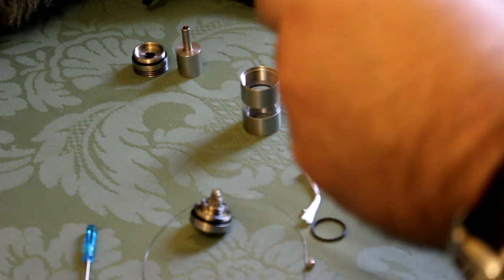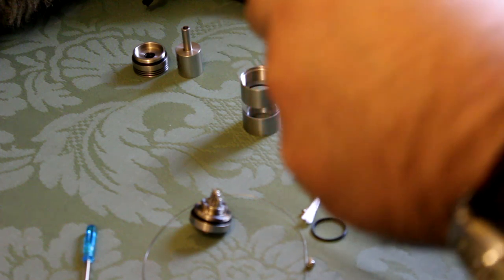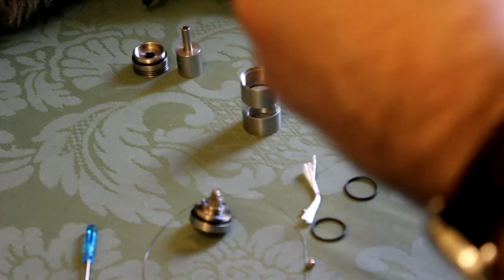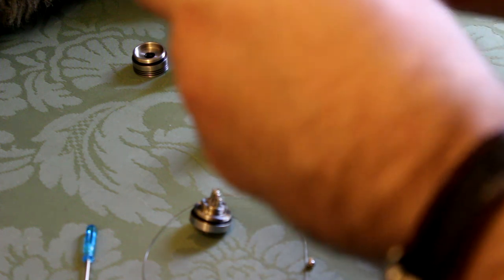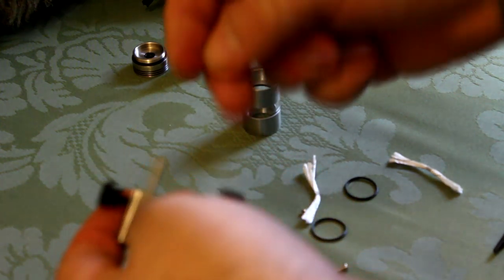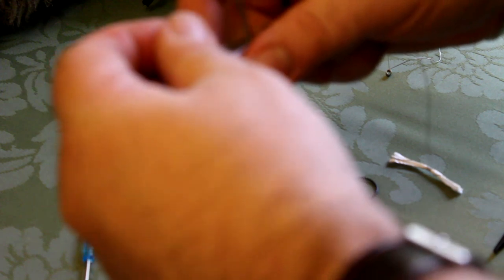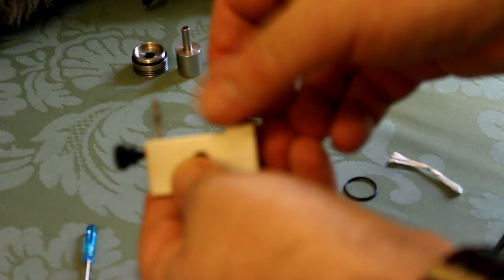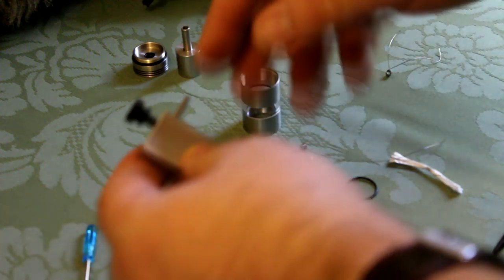So I'll do my two coils for the Orchid. One, two, three, four, five, six, seven, eight. There we go, eight wraps of 28 gauge kanthal. I'll do the same with this one. I'll tidy them up once I've got them on my mod.